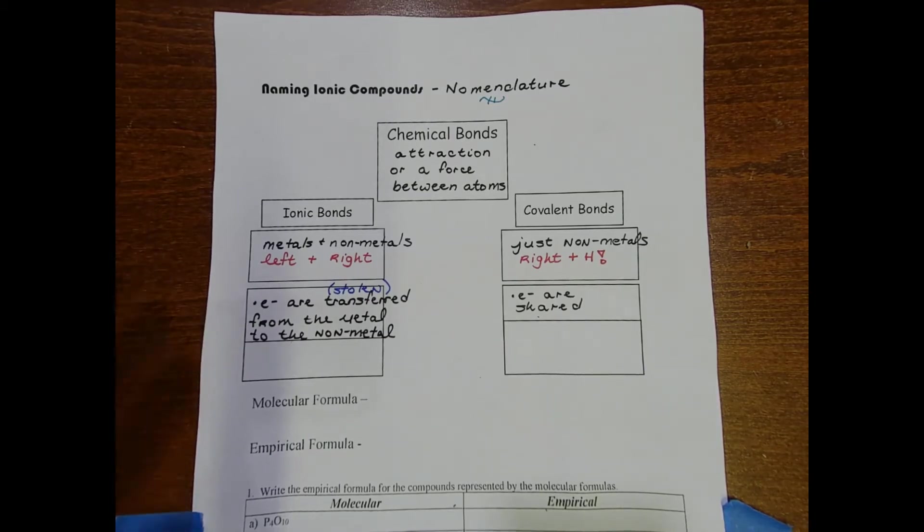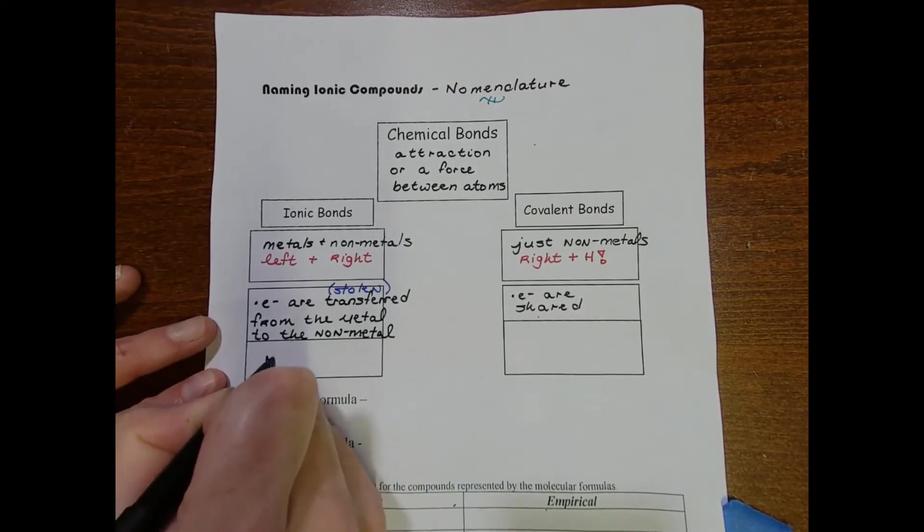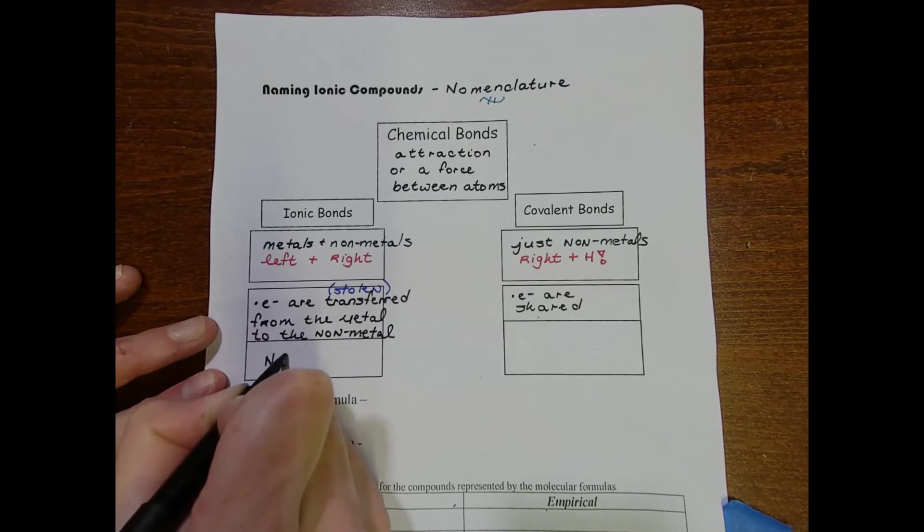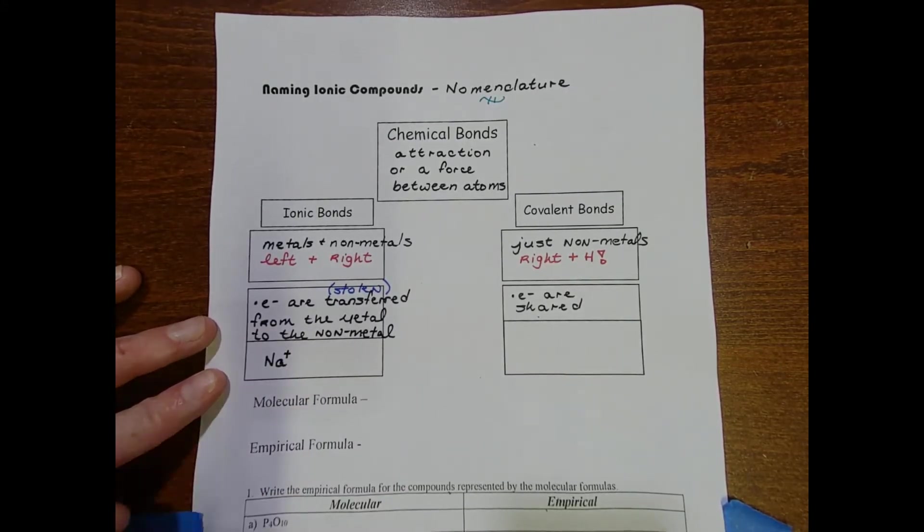We need to have a way to depict an ionic bond versus a covalent bond. The classic example of an ionic bond is sodium chloride. What happens is sodium's all the way in group one and it loses one electron so it has a plus one charge.